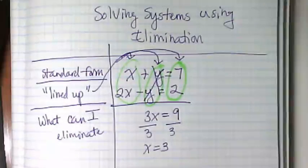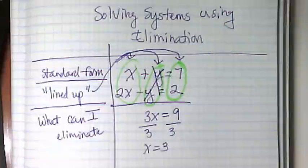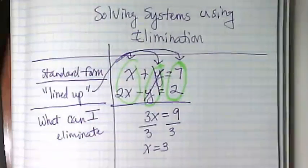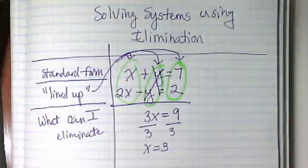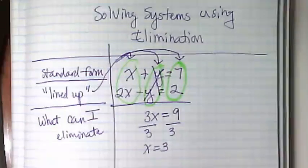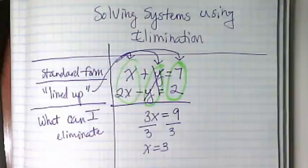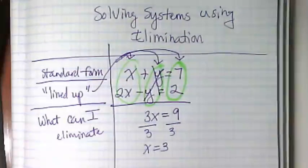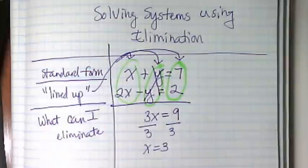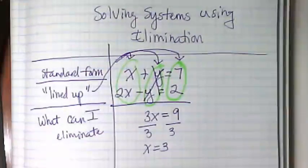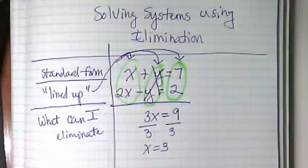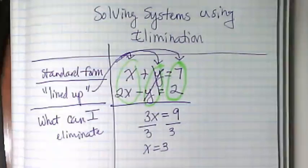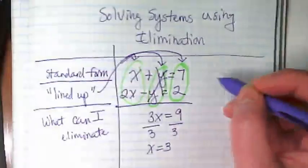That is step 1 of elimination. Line them up and see what's going to become a zero. Sometimes they don't have something obvious like plus Y and minus Y. And we'll do a problem like that in a minute. But right now we have the X. What do we need to find? What's the other half of the solution? Yeah, we need the Y.